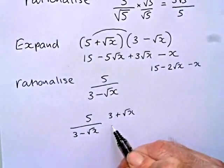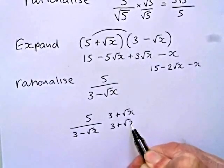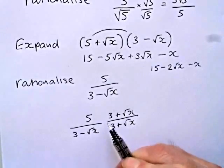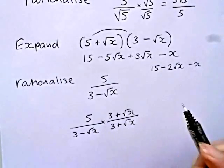And what this will have the impact of doing is eliminating the surds in the denominator, which is exactly what you want to have.